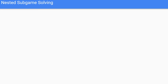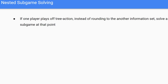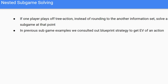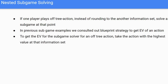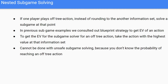Instead of action translation, you can use nested subgame solving. If a player plays an off-tree action, instead of rounding to another information set, we solve the subgame at that point — so if someone bets $170, we create a subgame as if they actually played $170. To get the expected value for an off-tree action in this context, we take the action with the highest value at that information set — the counterfactual best value — and set that as our expected value in the blueprint. Note: we can't do this with unsafe subgame solving because we don't know the probability of reaching an off-tree action, so we're forced to use safe subgame solving here.